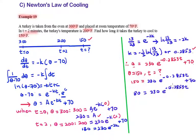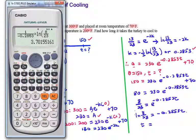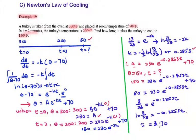80 divided by 230 is 8 divided by 23 equals e to the negative 0.2853T. On both sides, we have ln(8/23) equals negative 0.2853T. Solving this, T is equal to 3.70 minutes.